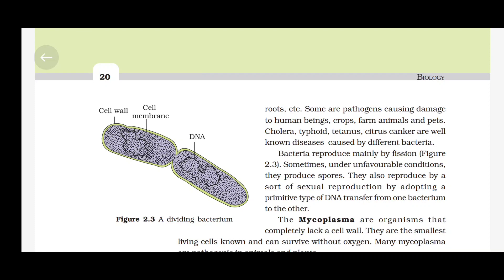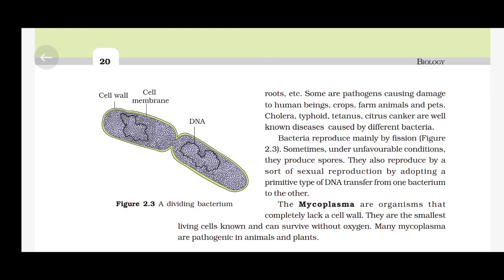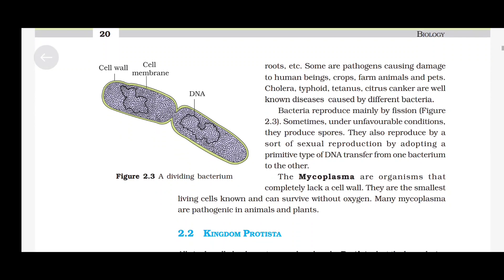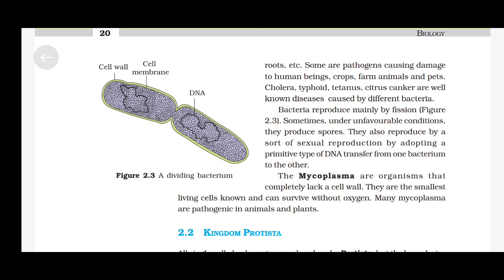Some bacteria are pathogens causing damage to human beings, crops, farm animals and pets. Cholera, typhoid, tetanus, and citrus canker are well-known diseases caused by different bacteria. Bacteria reproduce mainly by fission. Sometimes, under unfavourable conditions, they produce spores. They also reproduce by a sort of sexual reproduction by adopting a primitive type of DNA transfer from one bacterium to the other.